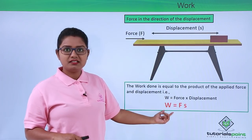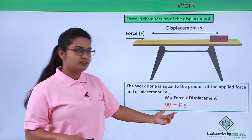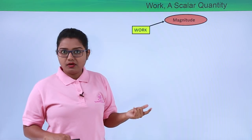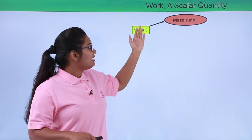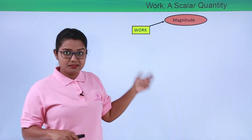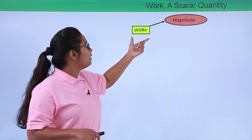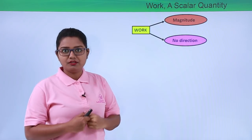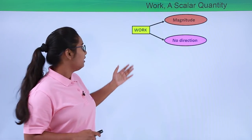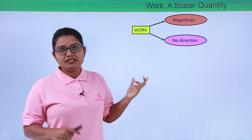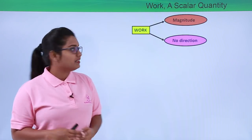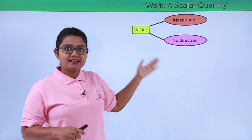Let us know something more about this physical quantity — work done. Work done in a particular physical activity has a particular magnitude, meaning it has a particular amount of work done on the body. But this physical quantity, work, has no direction at all — it is just an amount of something. Any physical quantity which has magnitude but no direction is said to be a scalar quantity. So work done is a scalar quantity.